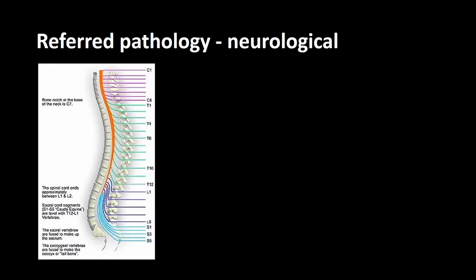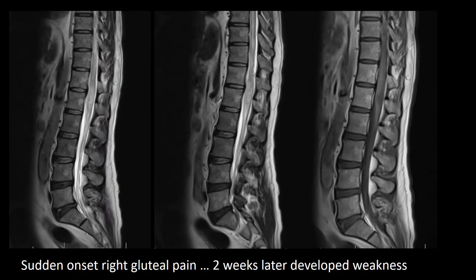Looking at referred pathology, we must remember that nerves can be irritated proximally and still result in distal neurological symptomatology. Here is such a case where a man presented with acute onset of right gluteal pain, thought to be sciatica by his physician. Two weeks later he developed weakness, and an MRI scan confirmed a conus tumor.